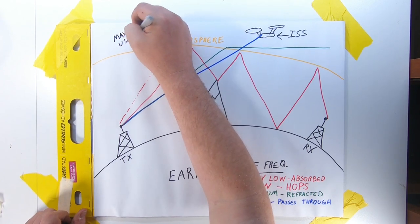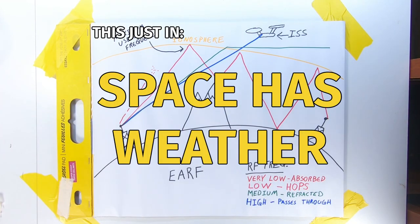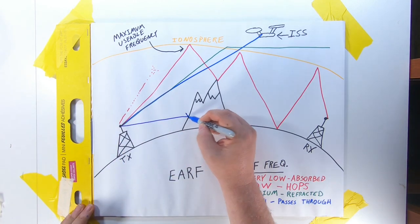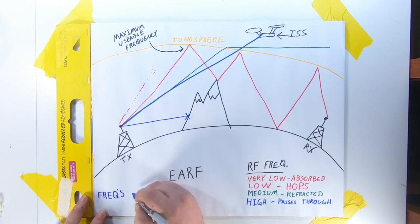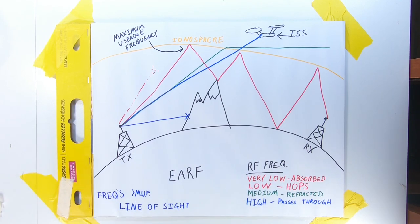The highest frequency that will bounce off the atmosphere and allow long-distance communication is called the maximum usable frequency. This frequency is variable based on where you're communicating to, the time of day, and the weather in space. Frequencies above the MUF work on line-of-sight properties, much like visible light. The path between you and what you're trying to communicate with has to be unobstructed by things like mountains or the curve of the Earth. Asterisk.